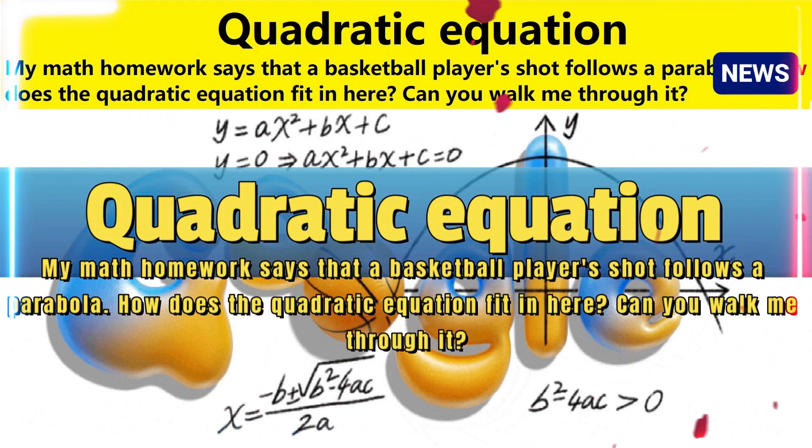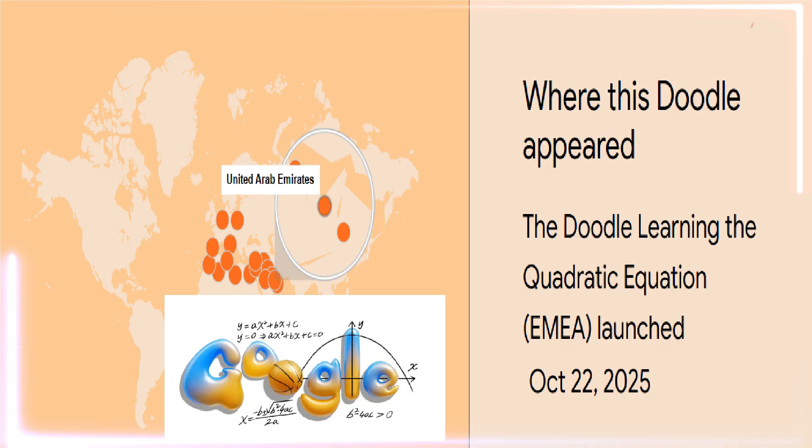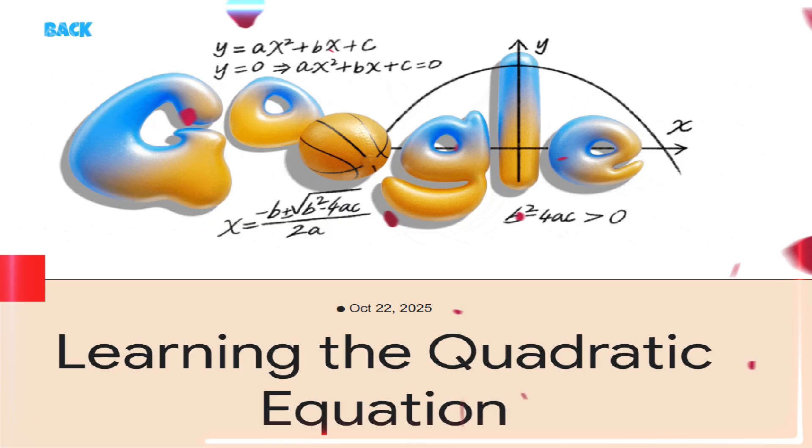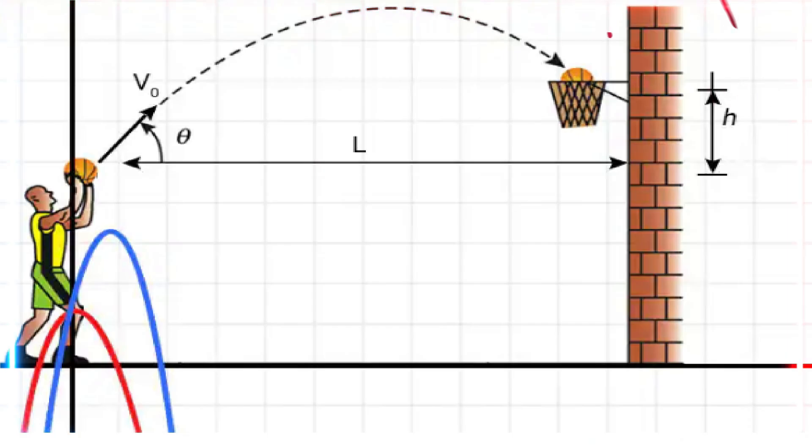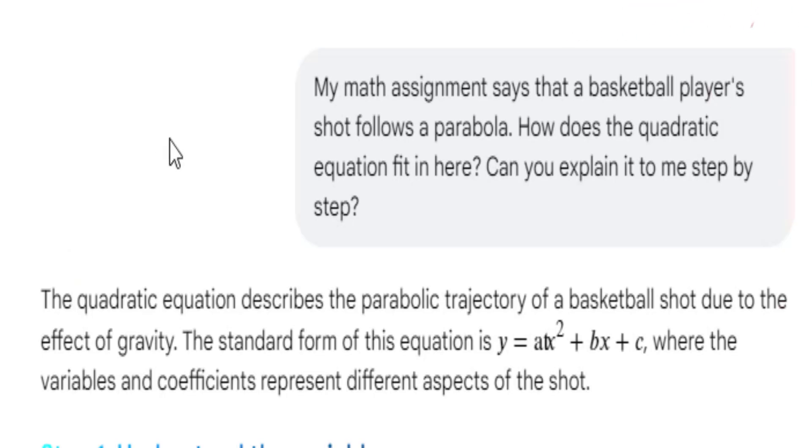Hello friends, quadratic equation Google Doodle is showing in many countries around the world. My math homework says that a basketball player's shot follows a parabola. How does the quadratic equation fit in here? Can you walk me through it?